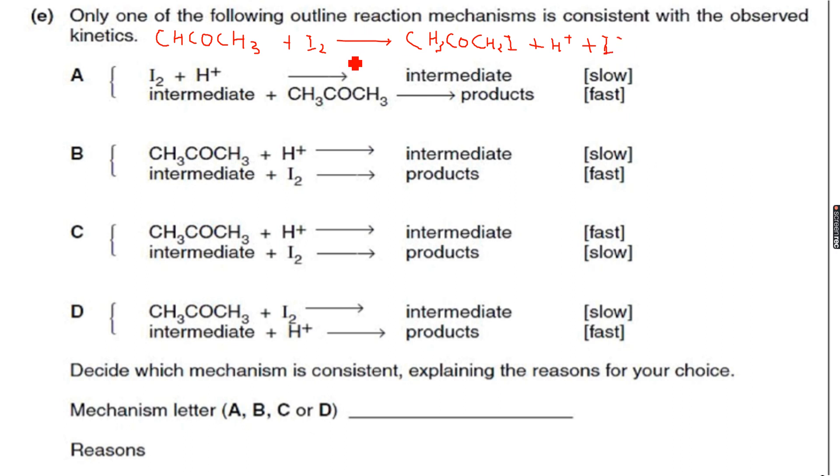They have also told us that this reaction happens in the presence of H plus ions, which means that H plus ions, they act as a catalyst in this reaction. And they have also given to us that the rate equation for this reaction is rate is equal to K times the concentration of propanone, CH3COCH3, times the concentration of H plus.